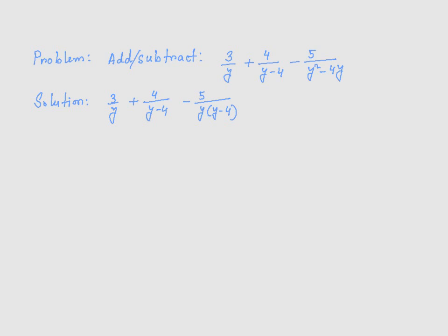Please note the following: y squared minus 4y can be factored out as y times (y minus 4). So that's what I did right here. It's the same thing, but the denominator for the third term has been simplified.